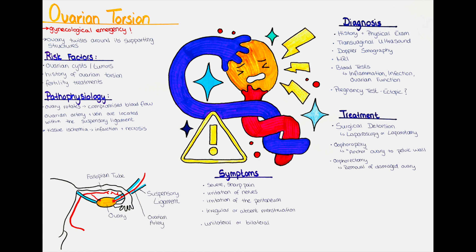If one ovary has been affected by torsion, the contralateral ovary may also be examined and evaluated during surgery to ensure its health and viability. Depending on the findings, additional measures such as oophoropexy or close monitoring may be considered to protect the remaining ovary.